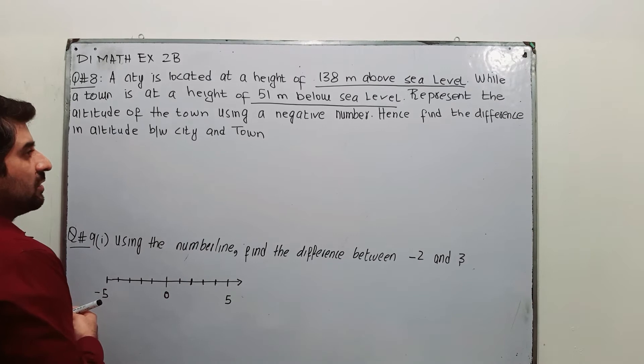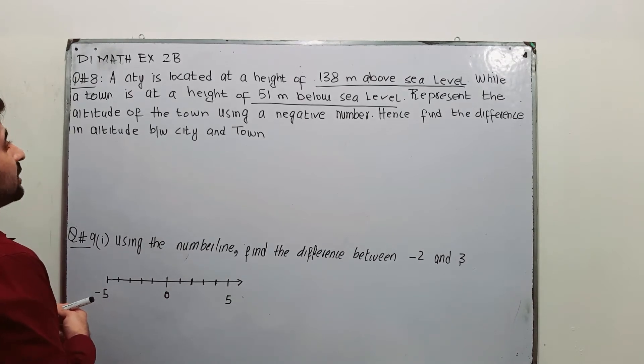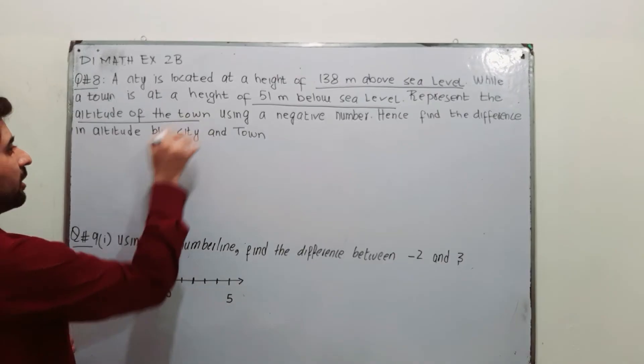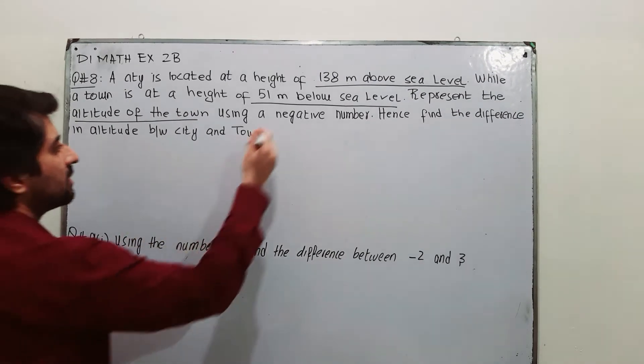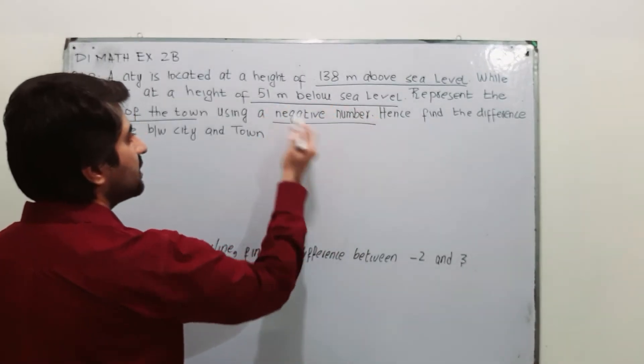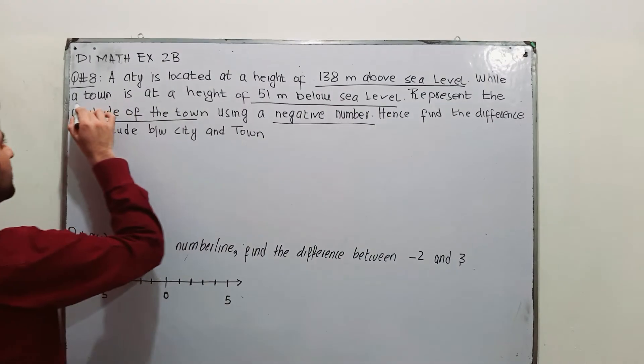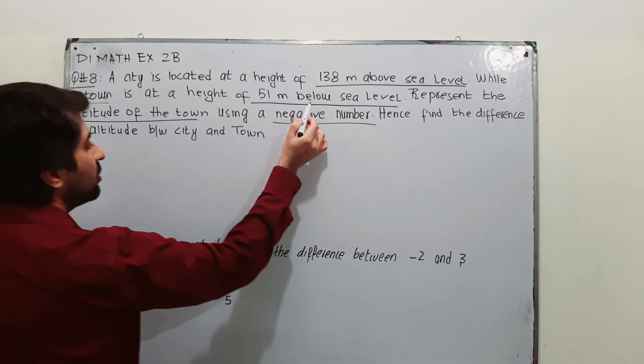First of all, we will represent the altitude of the town using a negative number because the town is 51 meters below the sea level.